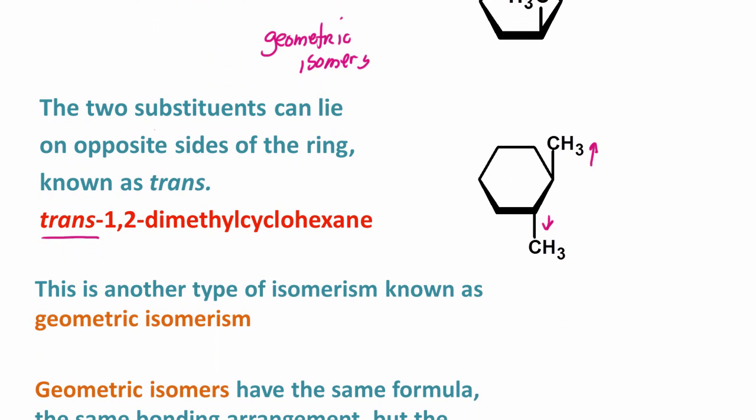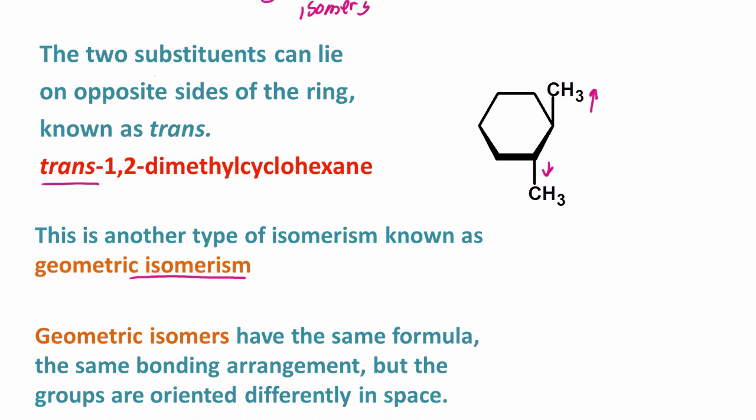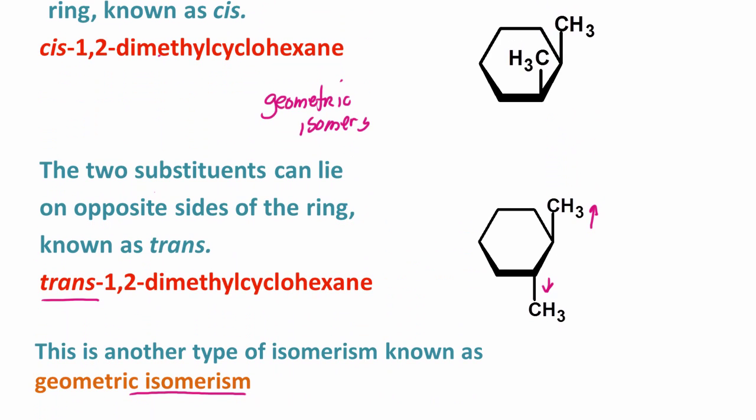This is a type of isomerism known as geometric isomerism. The way it works is geometric isomers have the same formula and the same bonding arrangement - the atoms are connected the same way - but the groups are oriented differently in space. For these two, they're geometric isomers because they have the same formula, atoms are connected the same, but they only differ in how these substituents are arranged in space.